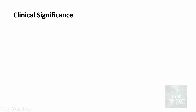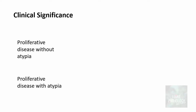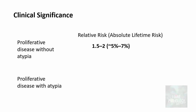The clinical significance of distinguishing proliferative breast disease with versus without atypia is expressed in terms of relative risk and absolute lifetime risk. Proliferative breast disease without atypia carries a relative risk of 1.5 to 2 — meaning incidence of breast carcinoma is up to twice as high compared to unaffected individuals — and a 5 to 7% absolute lifetime risk of developing invasive carcinoma without intervention. Proliferative breast disease with atypia carries a relative risk of 4 to 5 times compared to normal patients, and a 13 to 17% absolute lifetime risk of developing invasive carcinoma without intervention.